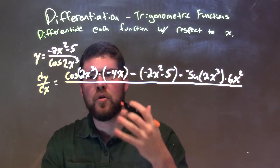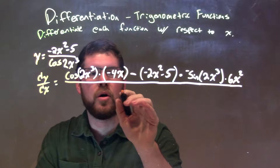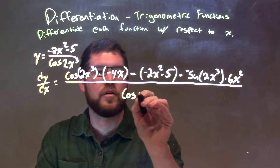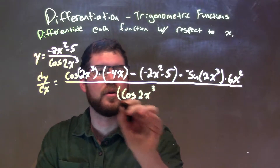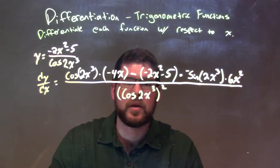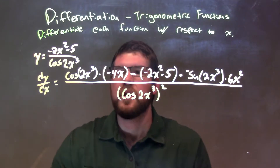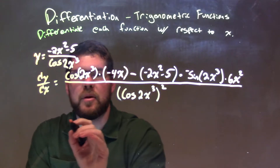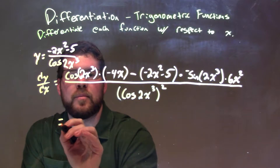All of that is over the denominator squared — cosine of 2x to the third power, all squared. Now let's do a little bit of simplification.